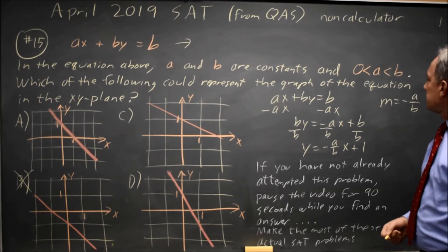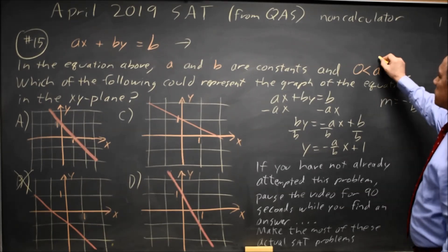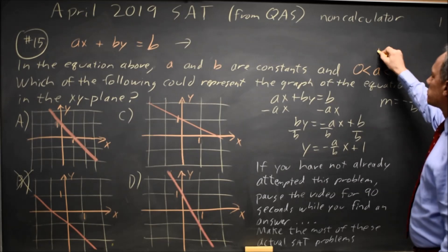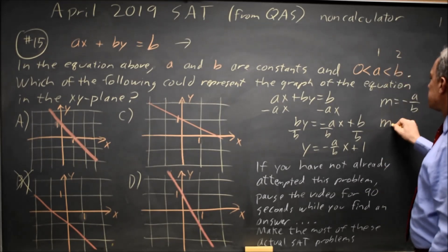where b is bigger than a. So I can make up some numbers. How about a equals 1, b equals 2, just to get a notion of what this looks like.